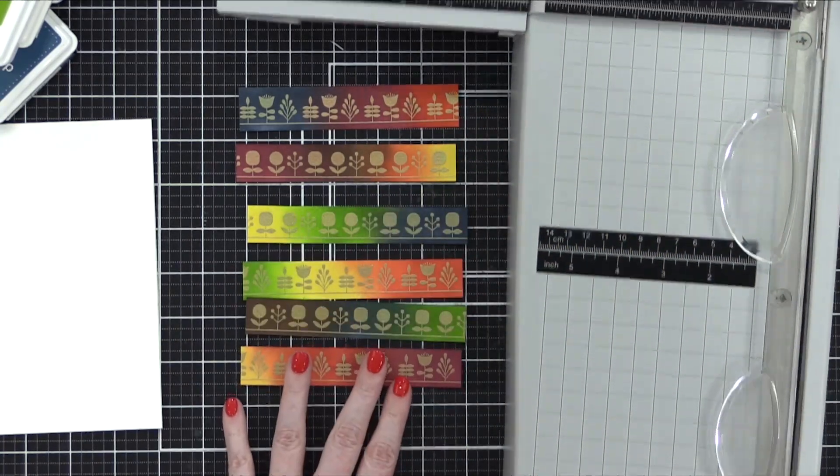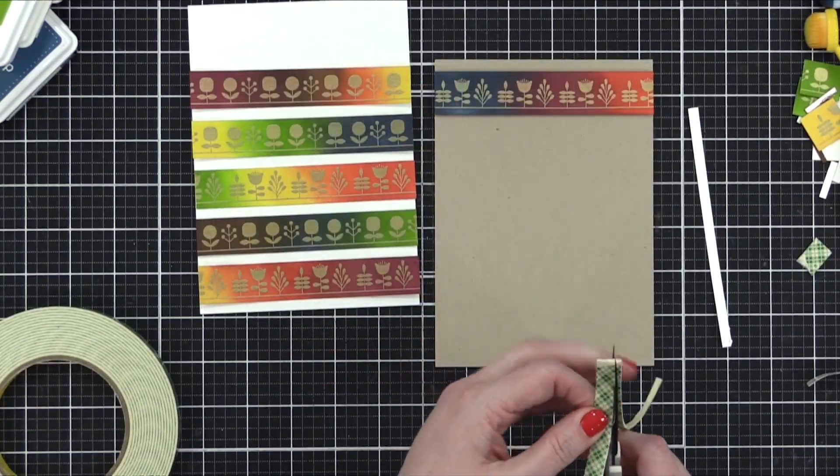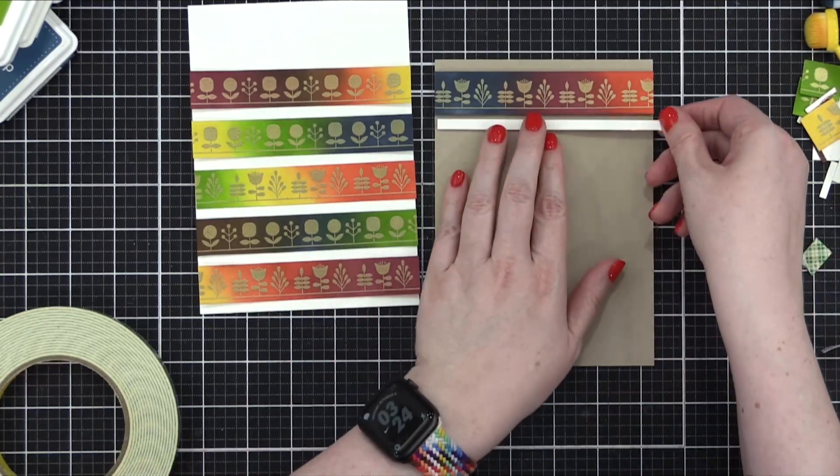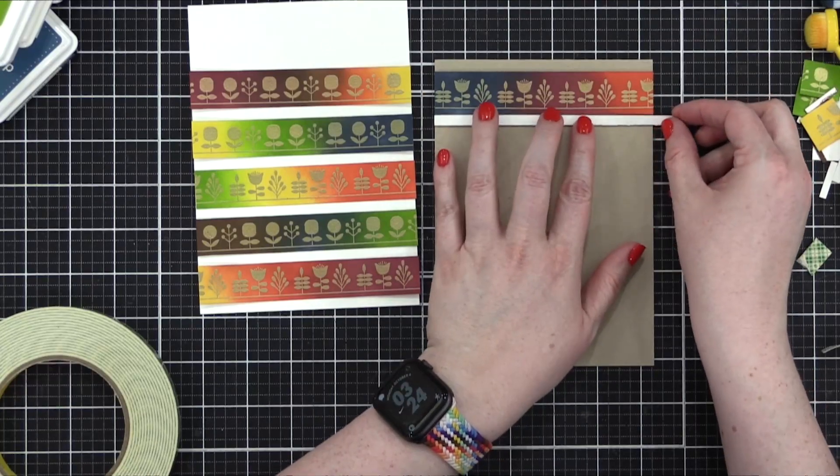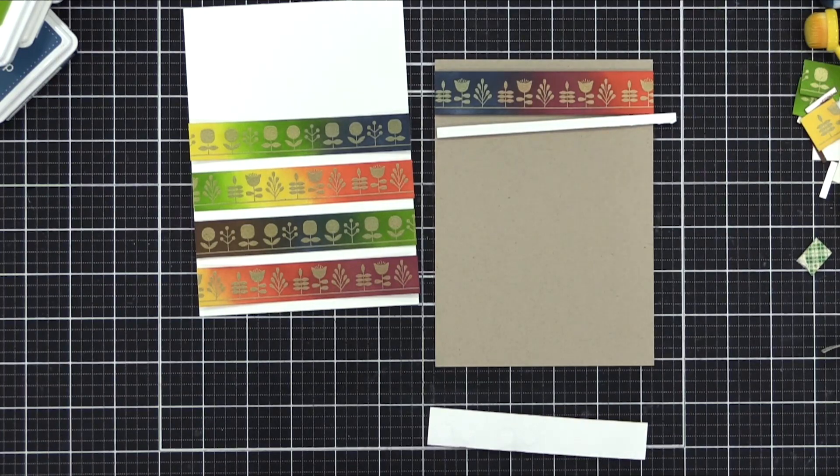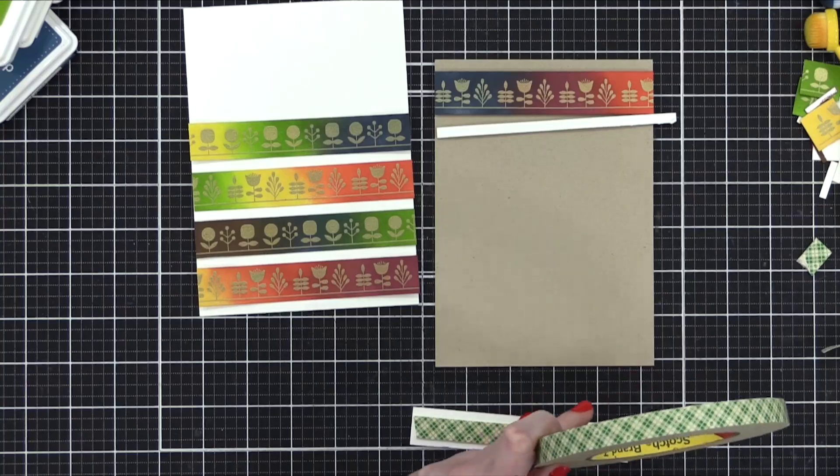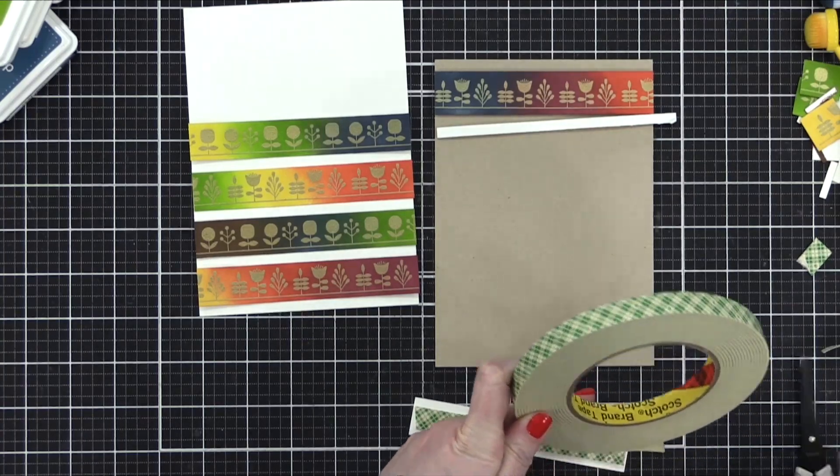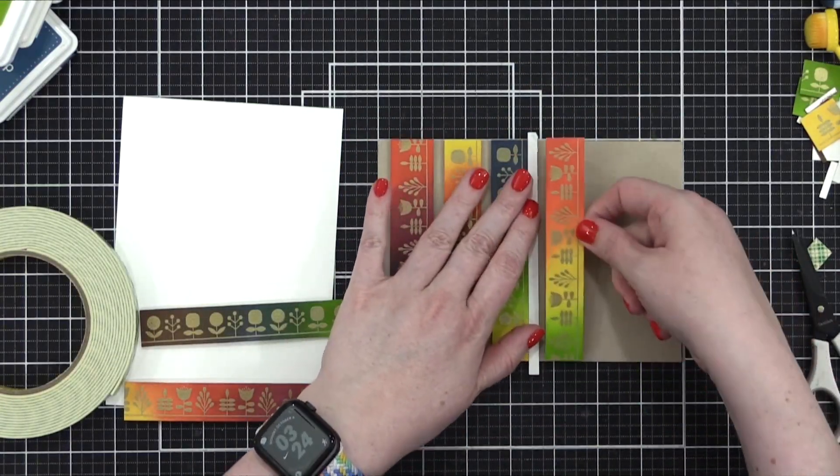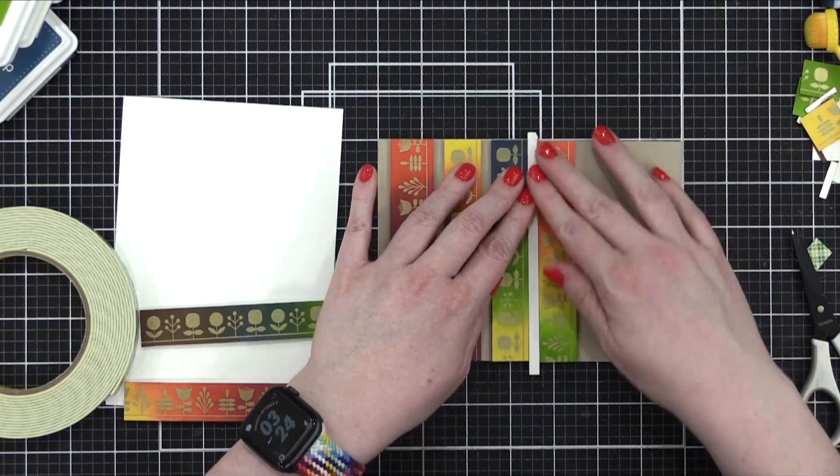I put some foam adhesive on the back of all these strips. I also cut an additional strip of just white cardstock that is a quarter inch. I put the foam behind it, and then I could use that as a spacer to space all of these rows. I put foam adhesive behind each ink blended row, and then I used that spacer so that I could get them spaced perfectly on my card front. It worked pretty well.